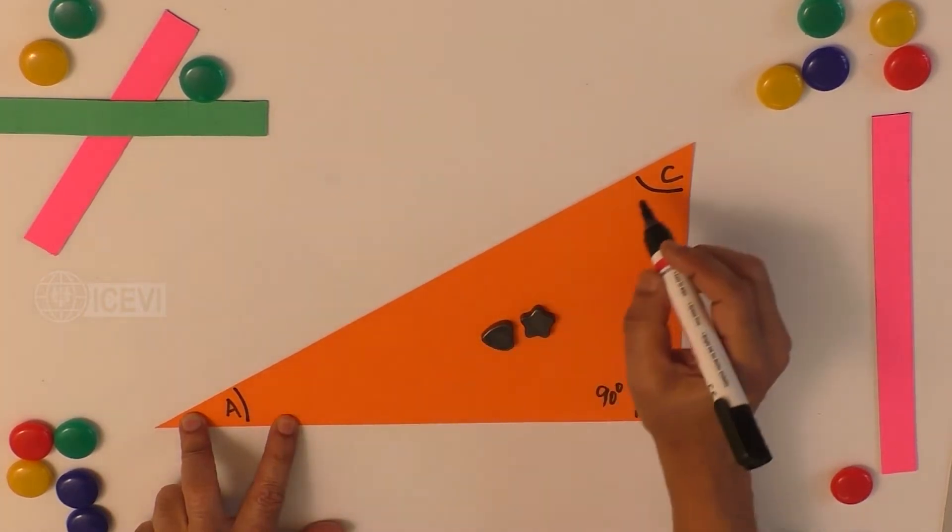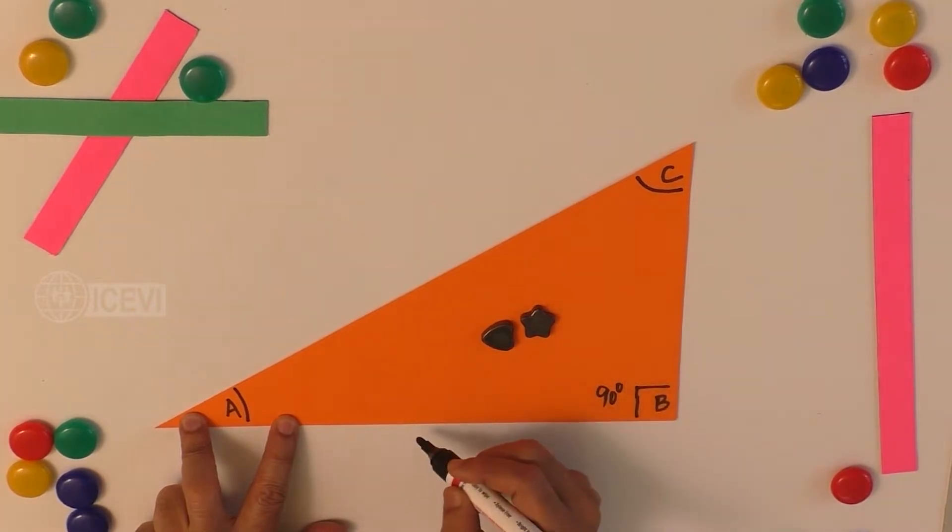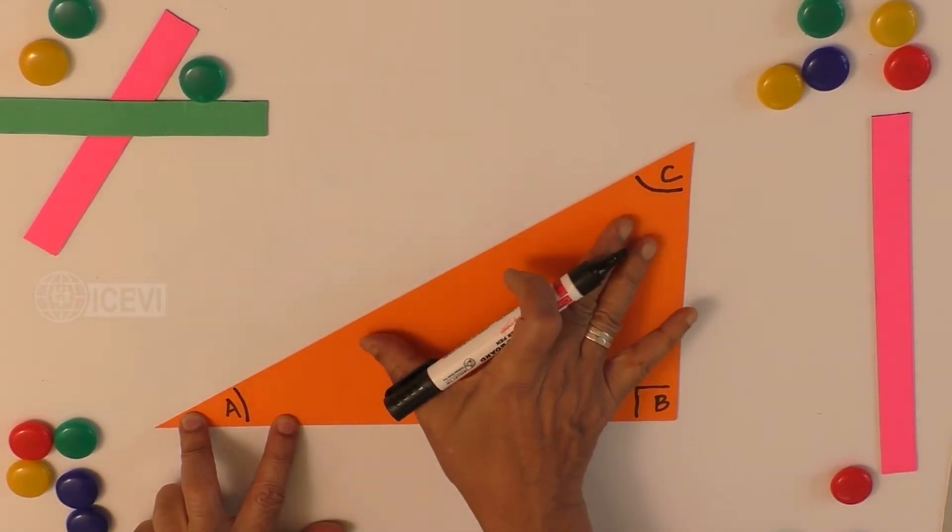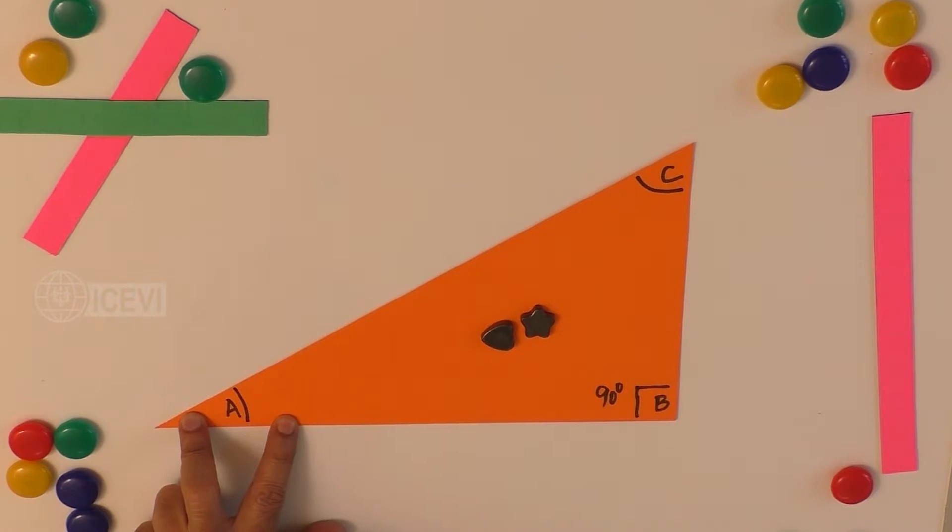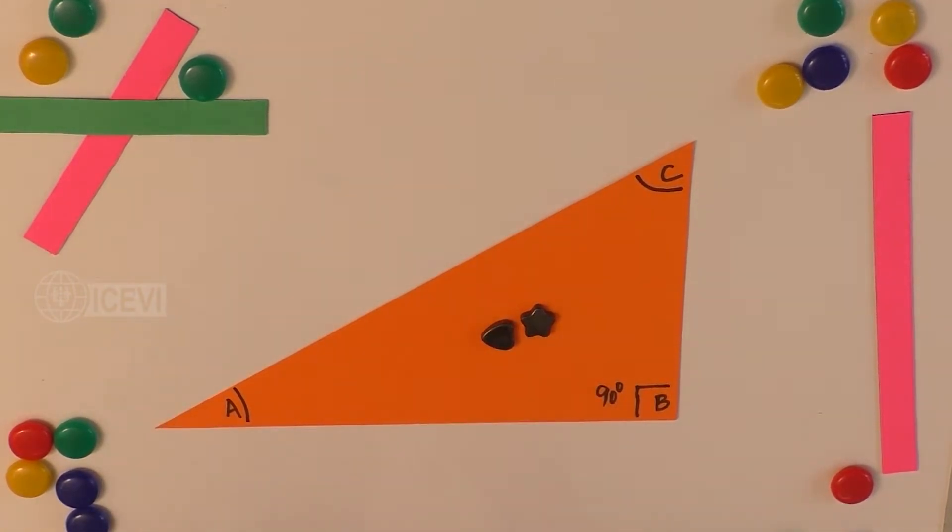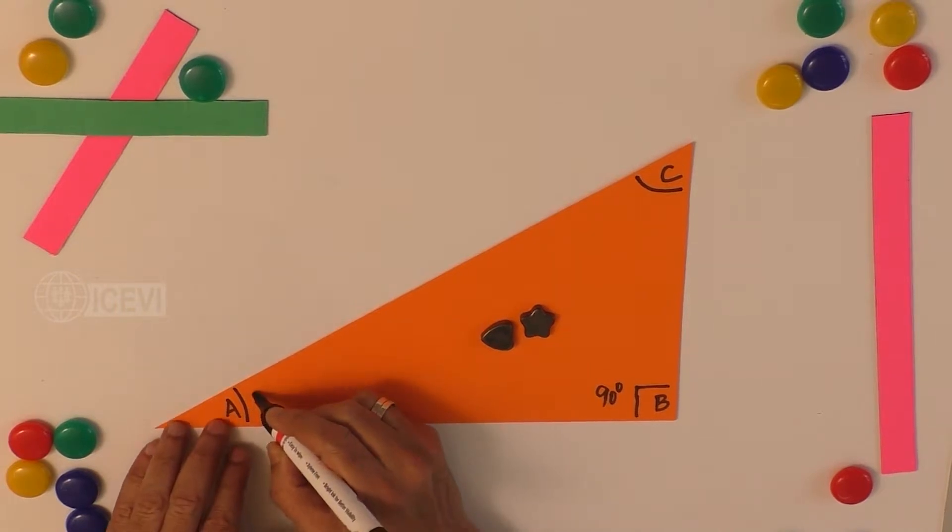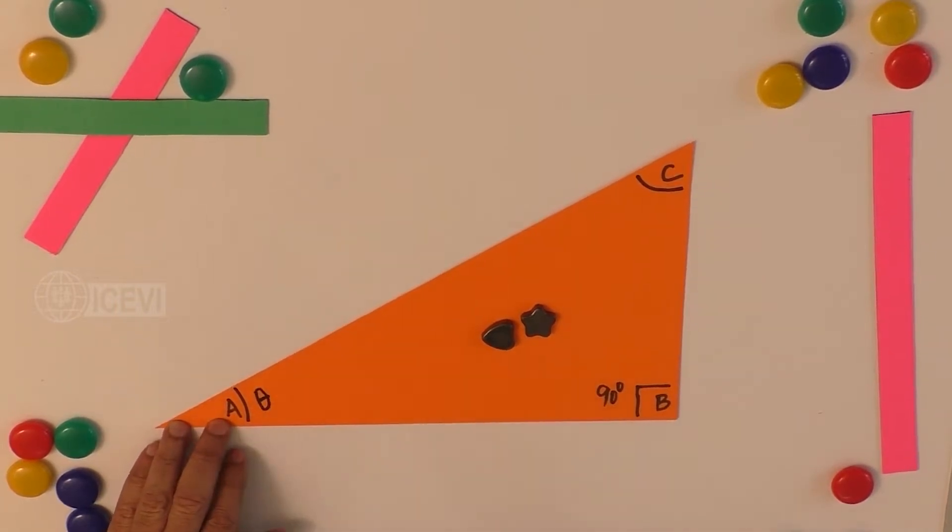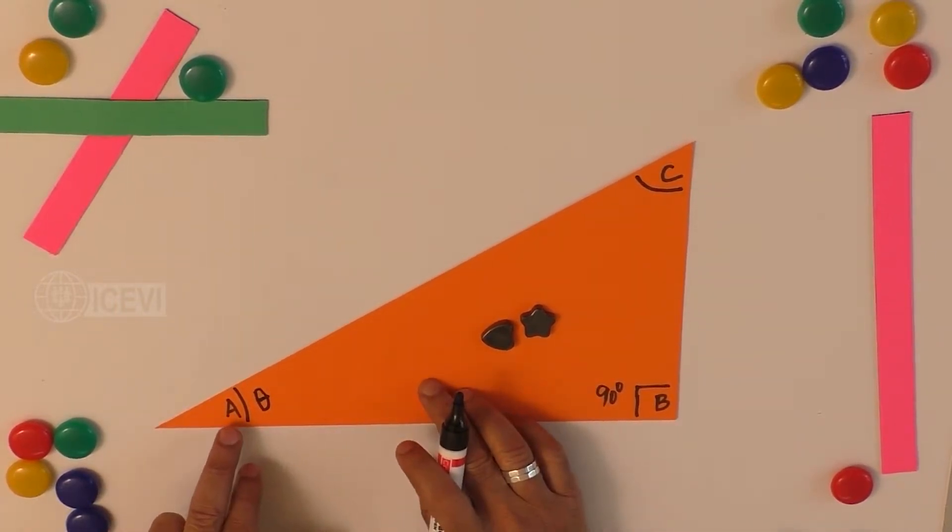So that means both are acute angles. So let us take one of the acute angles and call that as theta. So let angle A be called as theta.